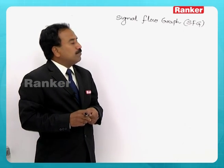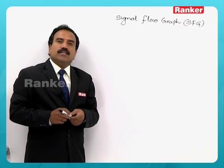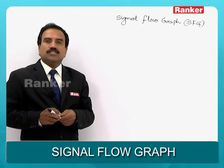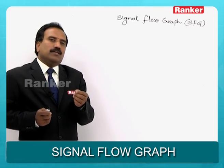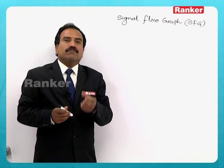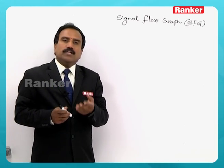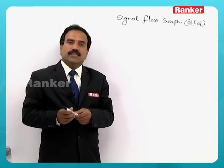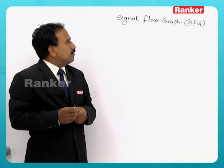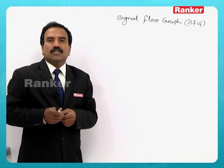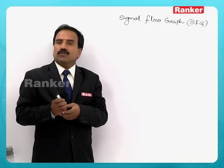It is a graphical representation of linear equations. As discussed in the previous section, when a system is described by a block diagram, finding out the transfer function of a given block diagram or system is very complex. There are 9 to 10 rules you must use, and for each step you need to draw the reduced block diagram and finally get a single block to find out the overall transfer function.